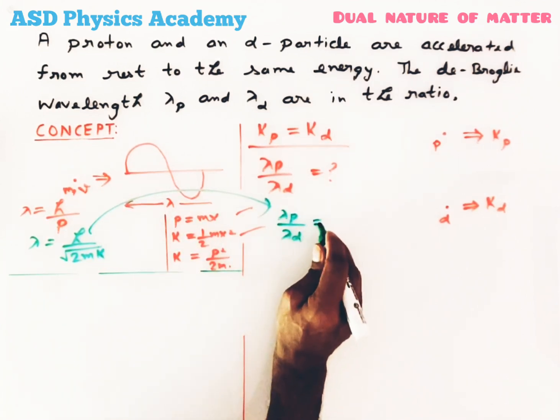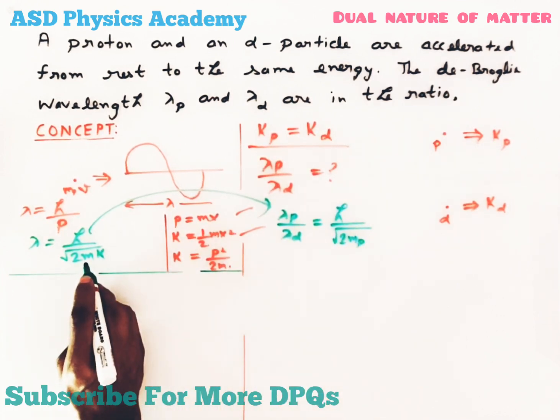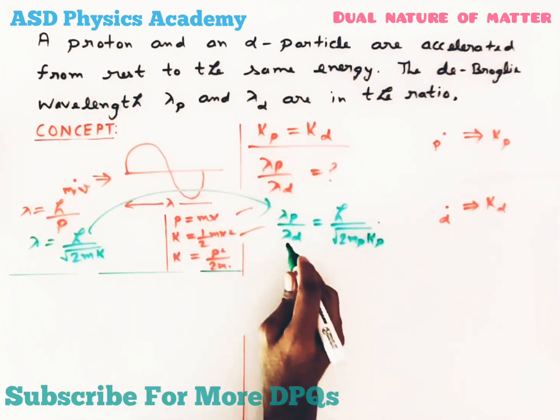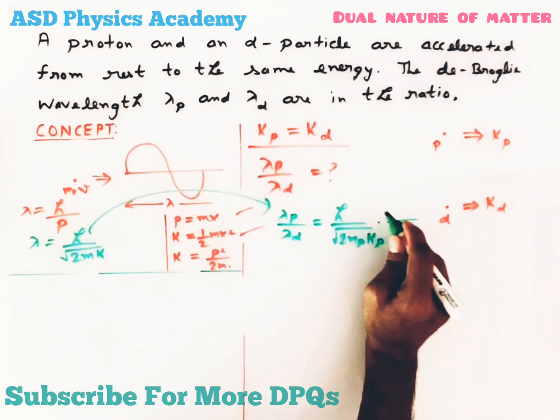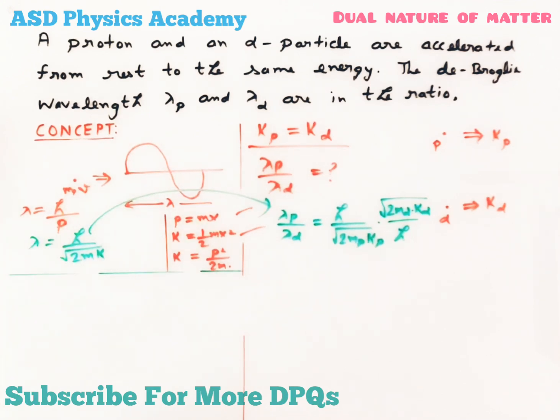Now same expression we will use here, so λp/λα is given by h/√(2mp·Kp) divided by h/√(2mα·Kα).